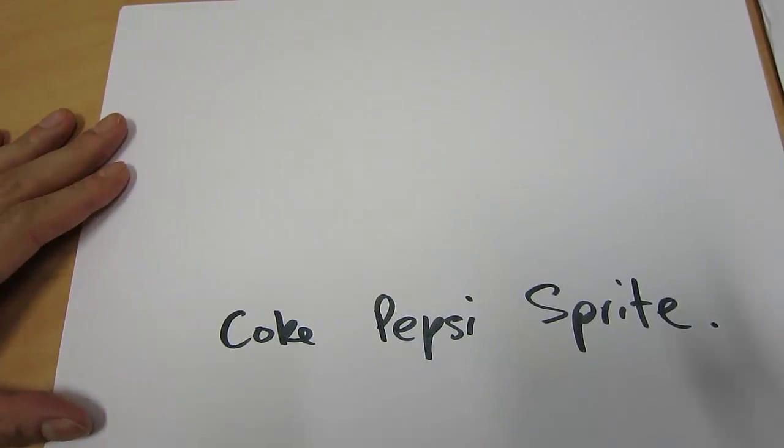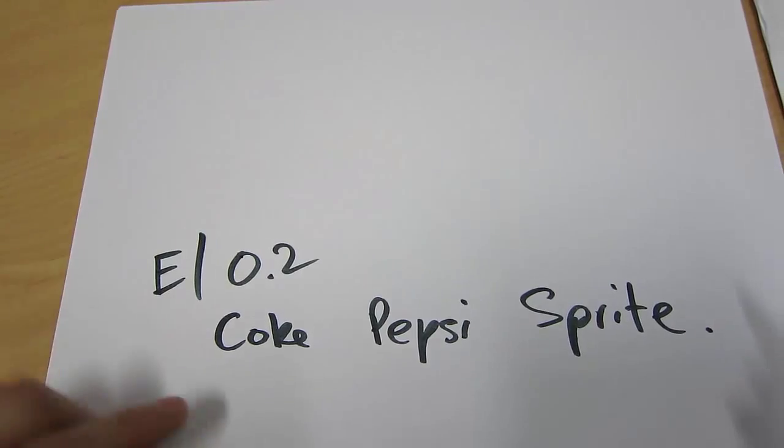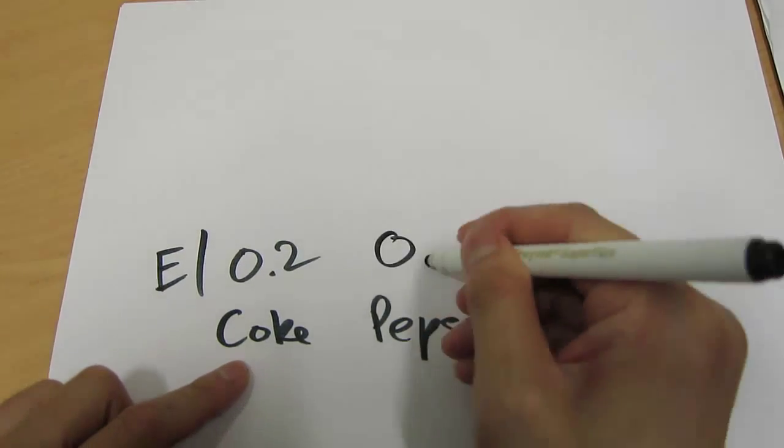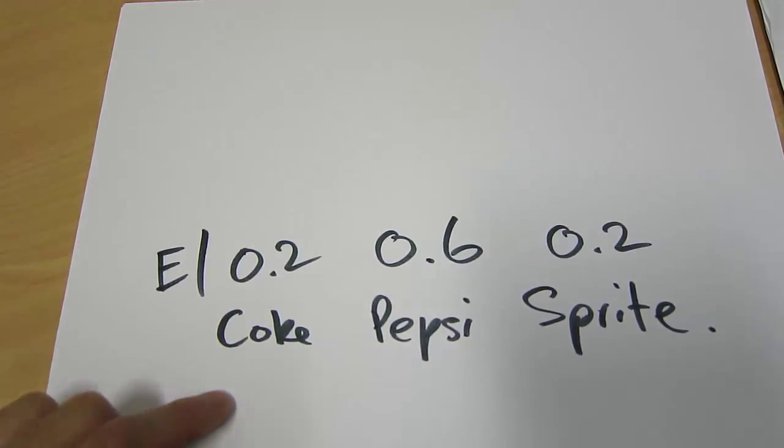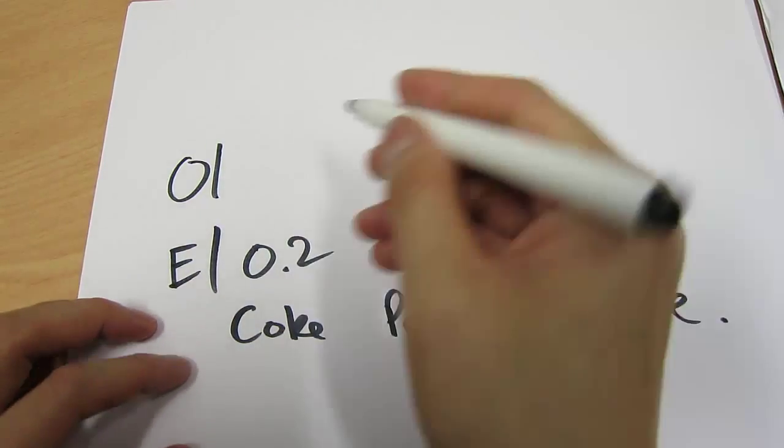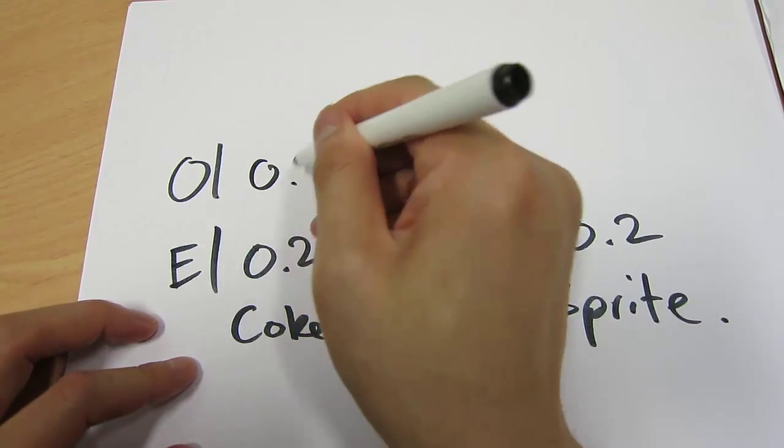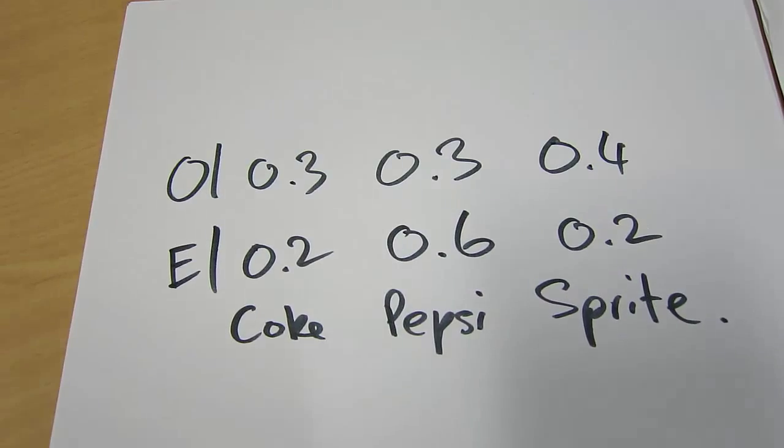And suppose we hypothesize the expected. We hypothesize that 20% of people drink Coke, 60% of people drink Pepsi, and the remaining 20% of people drink Sprite. And then we have our expected outcomes. It could be something else. It could be 30%, 30%, and 40%.